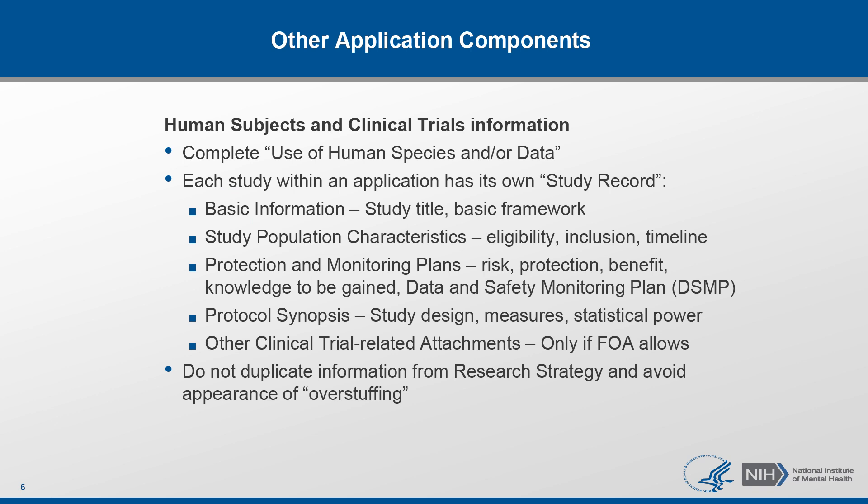Everyone must complete the use of human subjects and/or data section. Each study within an application should be unique and have a different study title. Each study record is divided into a number of sections. Section 1, basic information, should include a descriptive study title. Section 2, study population characteristics, should include information such as your inclusion/exclusion criteria. Section 3, protection and monitoring plans, should include a description of the risk to participants and what protections will be in place against these risks.